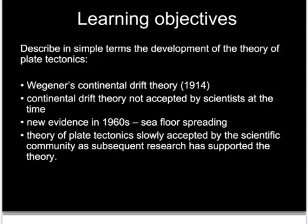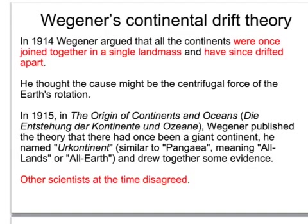The theory of continental drift and its causes were first put forward by Alfred Wegener in 1914. We must look at the evidence he had for his theory and the problems he had proving it. Wegener argued that the continents were once joined together in a single landmass and had since drifted apart. However, he didn't know what had caused this. He thought it might have been caused by the centrifugal force of the Earth's rotation, like clothes separating as they spin on a spin dryer. He wrote a book about his theory but other scientists did not agree because he couldn't explain how the landmasses had moved.